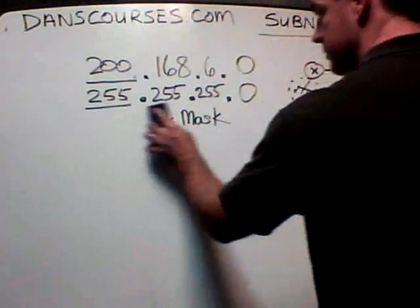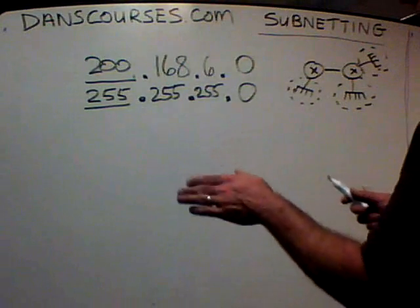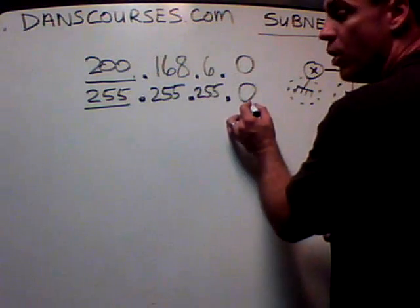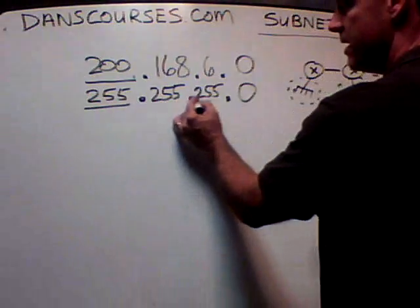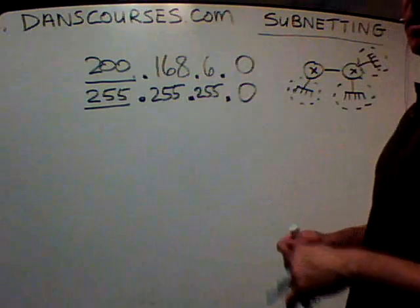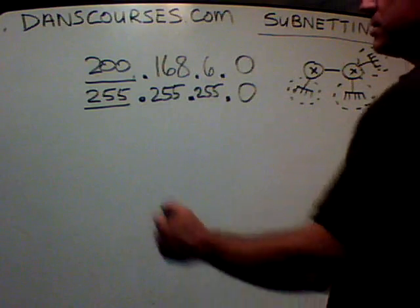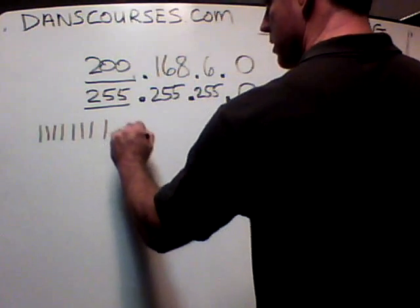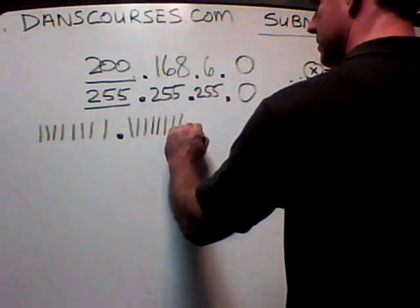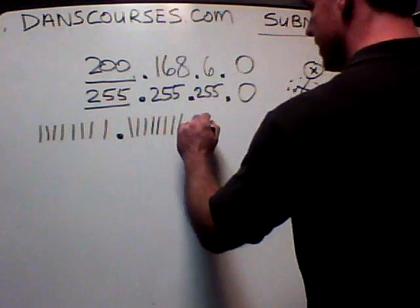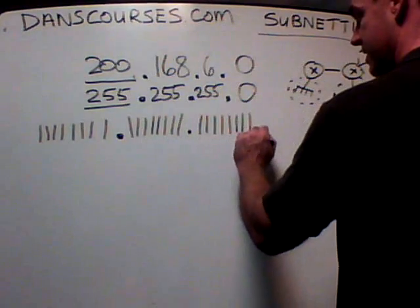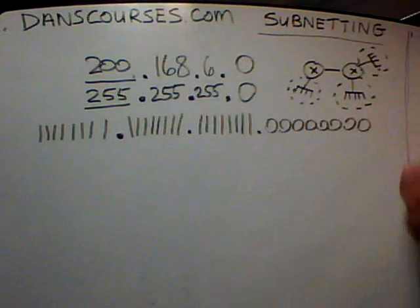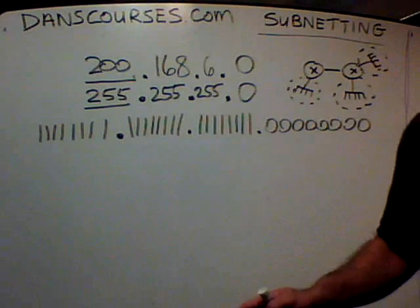The way you do that is by changing your subnet mask and borrowing bits from the host portion. The 255s represent the network portion, and the zero represents the host portion. So for a 255.255.255.0 mask, you have 24 network bits and 8 host bits. Let's stop this video and finish it in the next one.